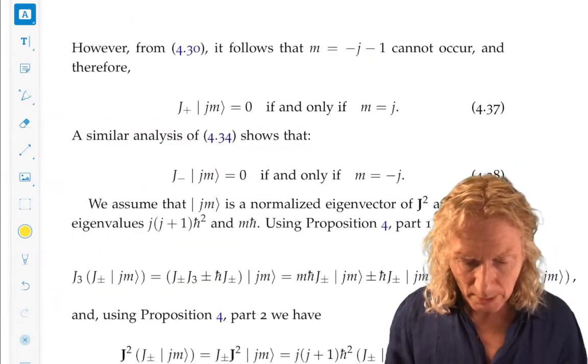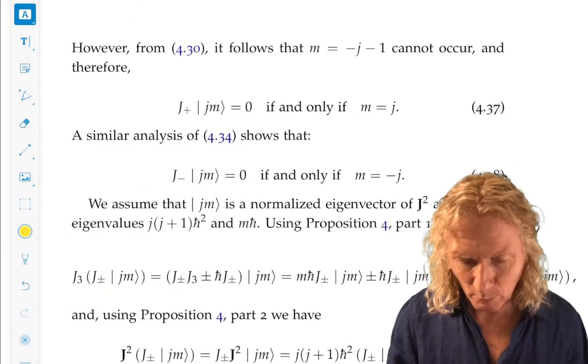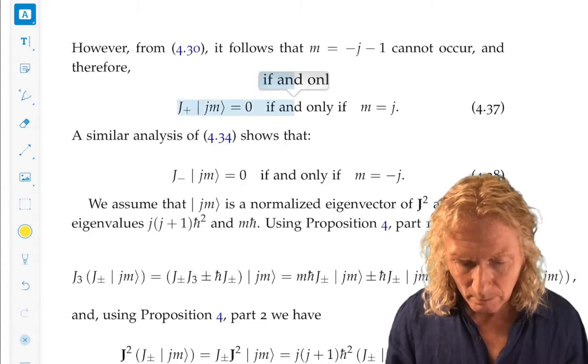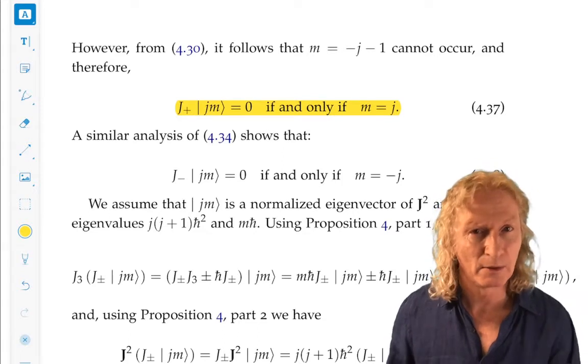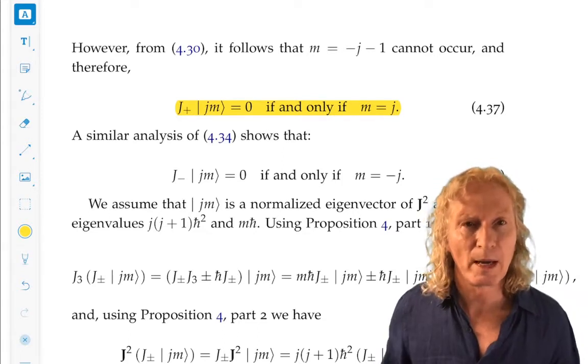We're going to look at J minus, so we have, summarizing, J plus acting on J, M is 0, if and only if M equals J. That makes sense. That's the maximum value of M.